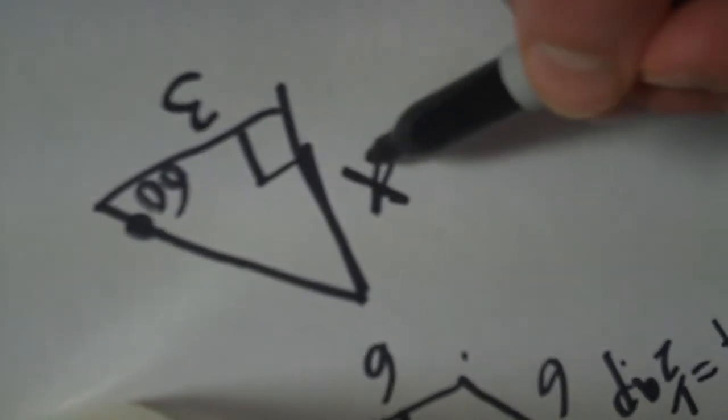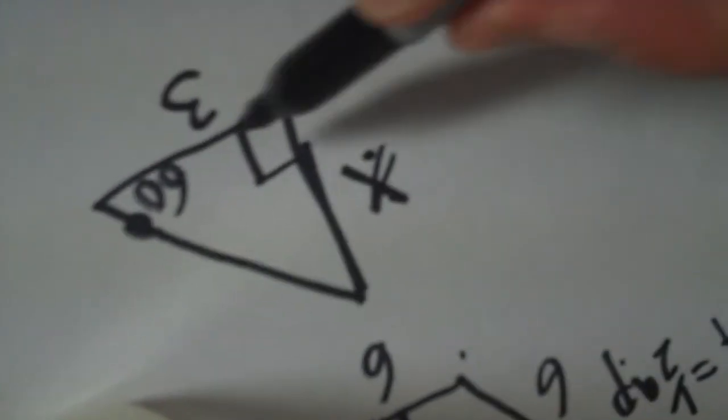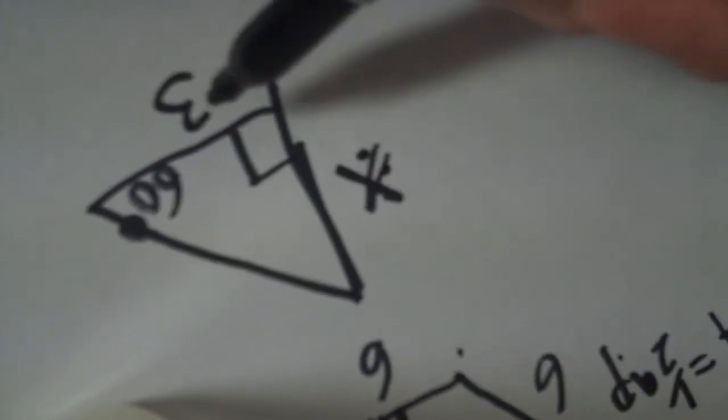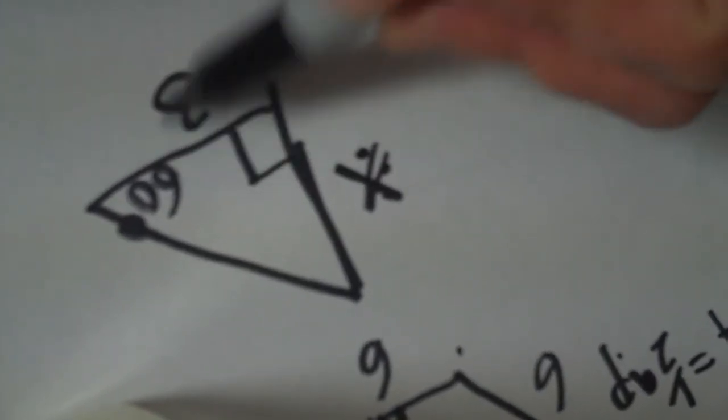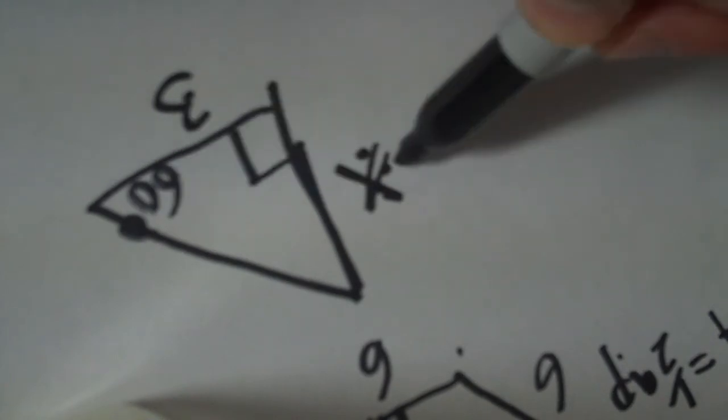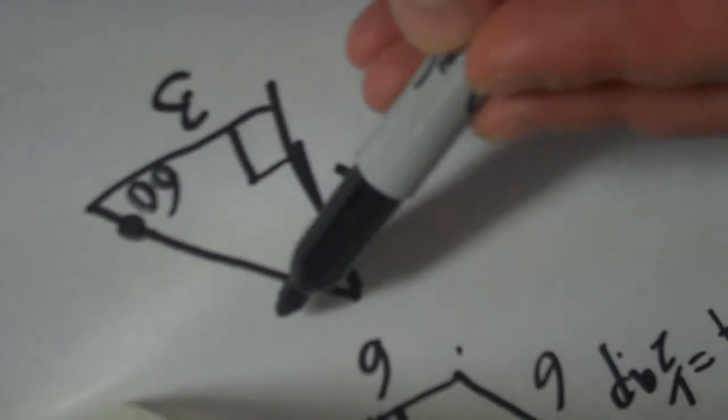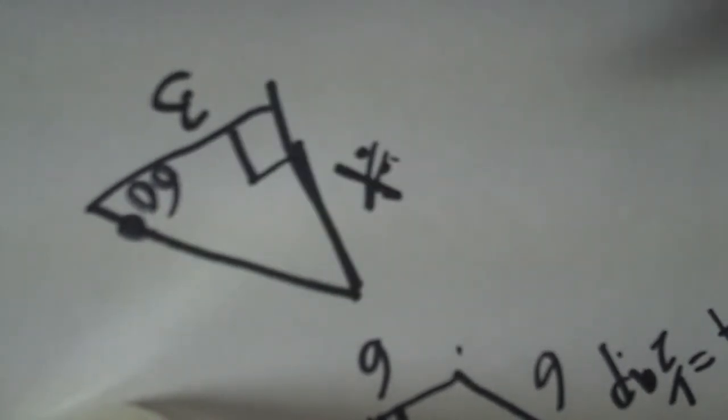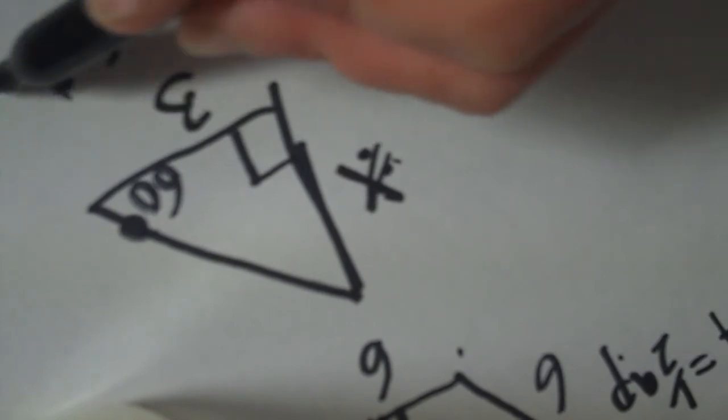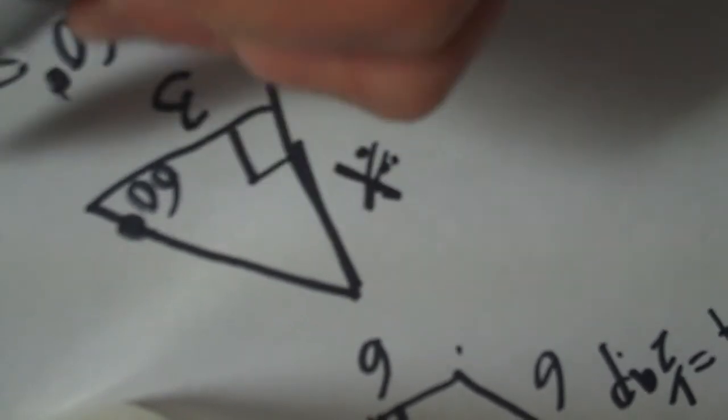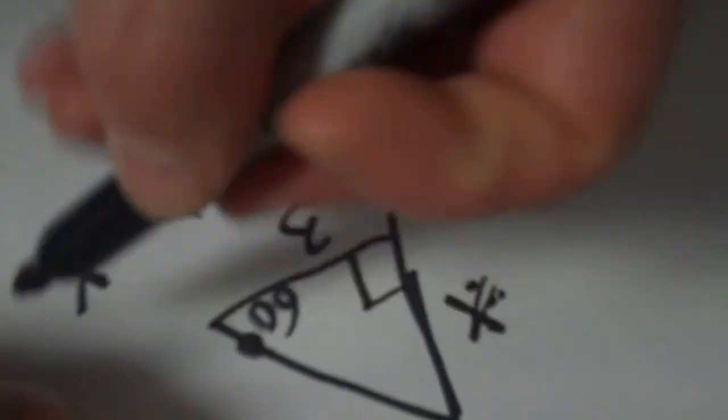From here, I can find out what this side is just by using the tangent, because I have the opposite side and the adjacent side, because it's the side that's making the angle, and the one opposite. The hypotenuse has no value to us at this point. So, what we're going to do is just do tangent of 60 degrees equals opposite, which is X, over three.